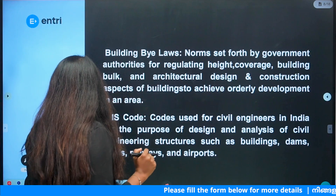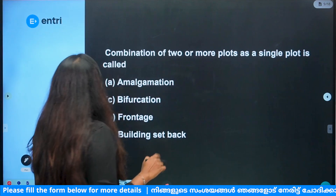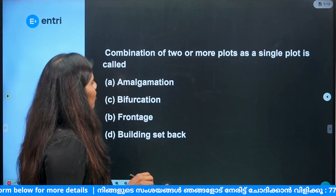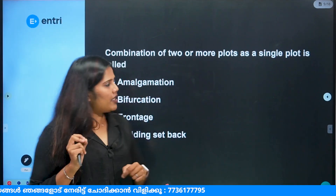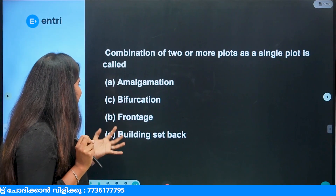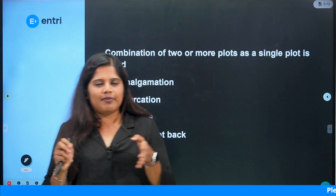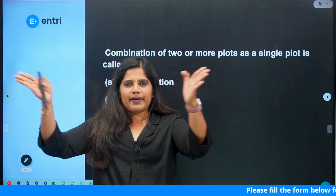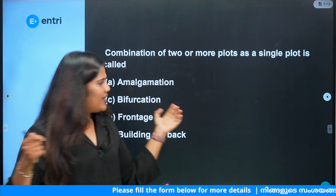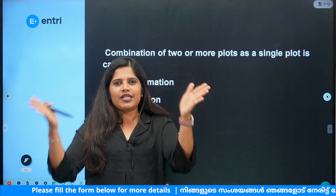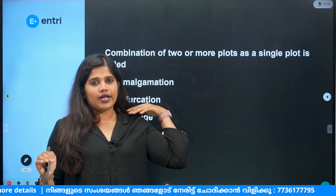Terms to know: Amalgamation, Bifurcation, Frontage, Building Setback. Bifurcation refers to a bifurcated stair — like a stair in a theater that splits and is separate on each side. Frontage — when it is a frontage, we call it road frontage. It is the distance of the building along the road.